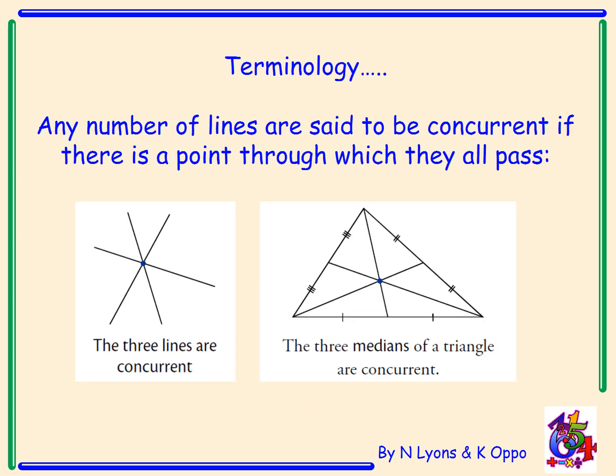Some more terminology. The three medians of a triangle are concurrent. The name of the point at which they meet is called the Centroid.